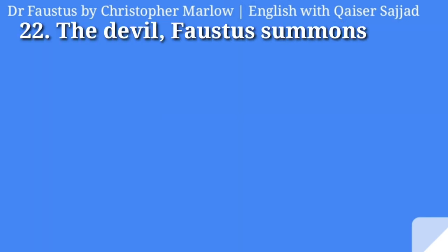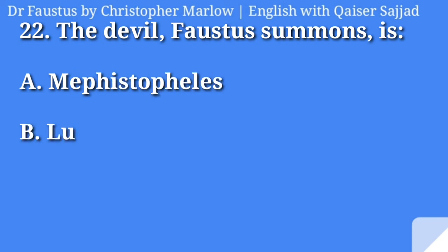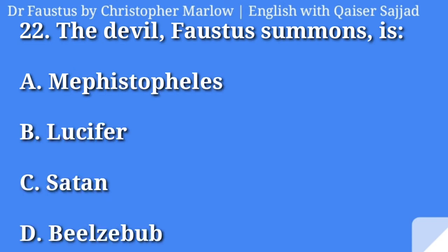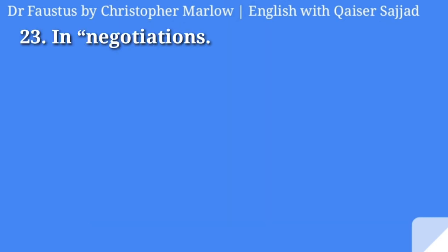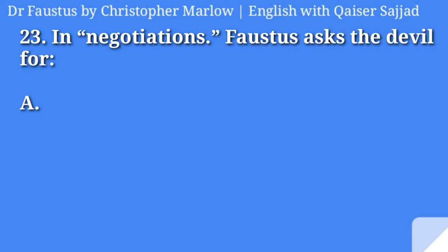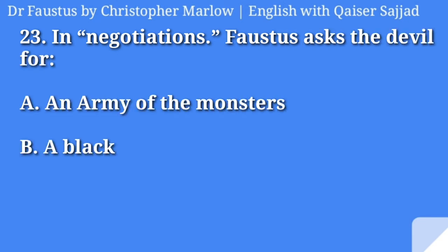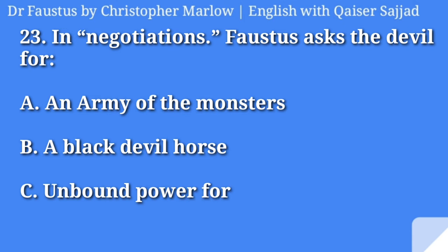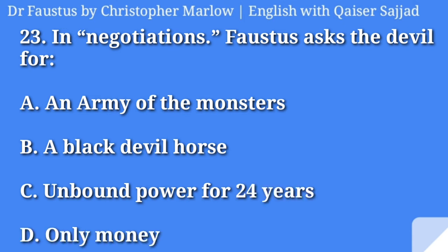The devil's fastest servant is Mephistopheles. In negotiation, Faustus asks the devil for: an army of monsters, a black devil horse, unbound power for 24 years, or only money? Answer is option C, unbound power for 24 years.